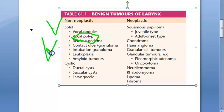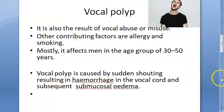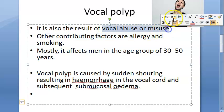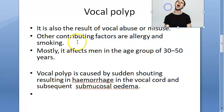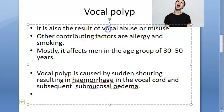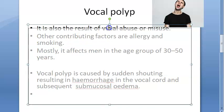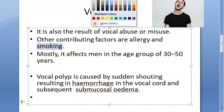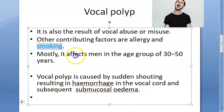Vocal polyps can flop up and down. They are seen in people who abuse or misuse their voice — usually men in the age group of 30 to 50. Contributing risk factors include allergy and smoking, which increase their risk further.